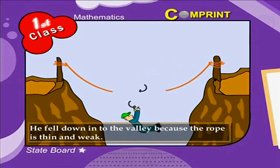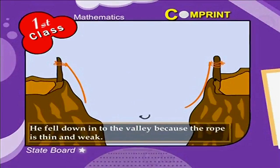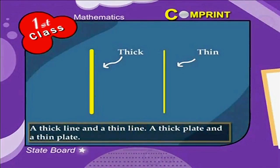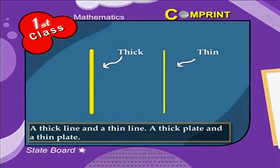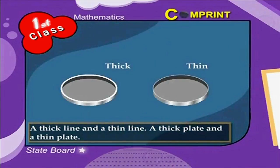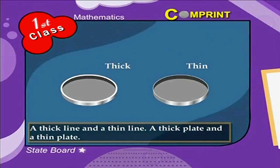Oh no, he fell down into the valley because the rope is thin and weak. Here are a few more examples: a thick line and a thin line, a thick plate and a thin plate.